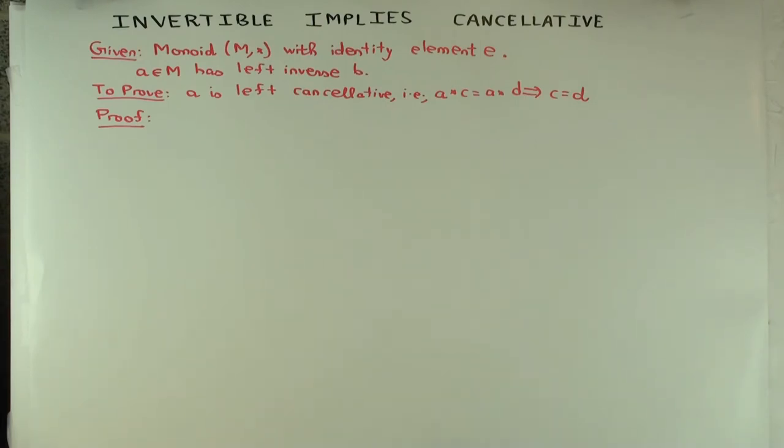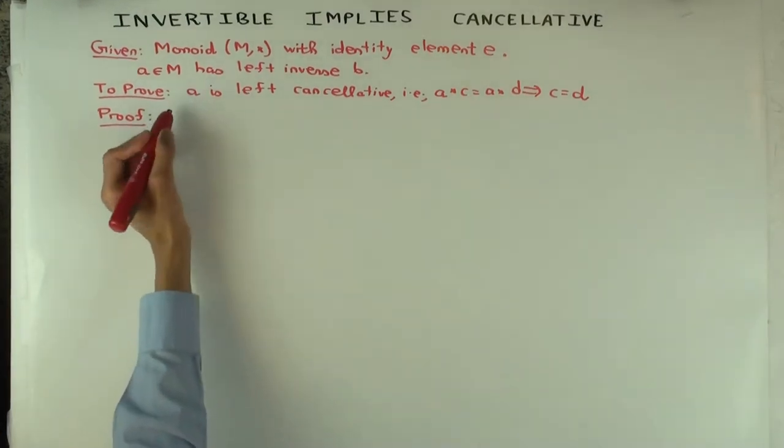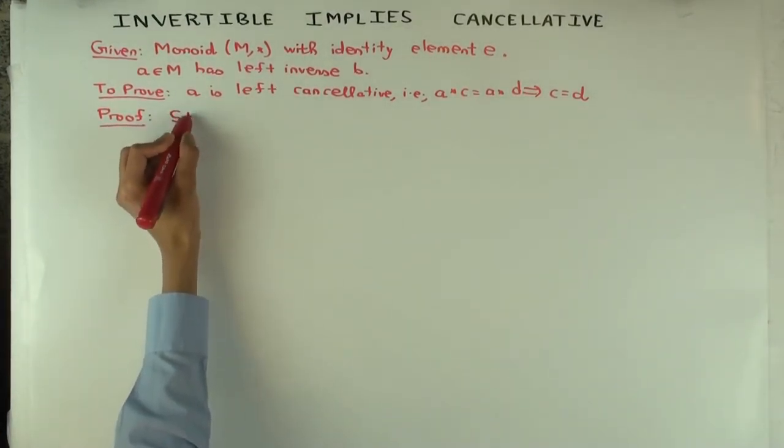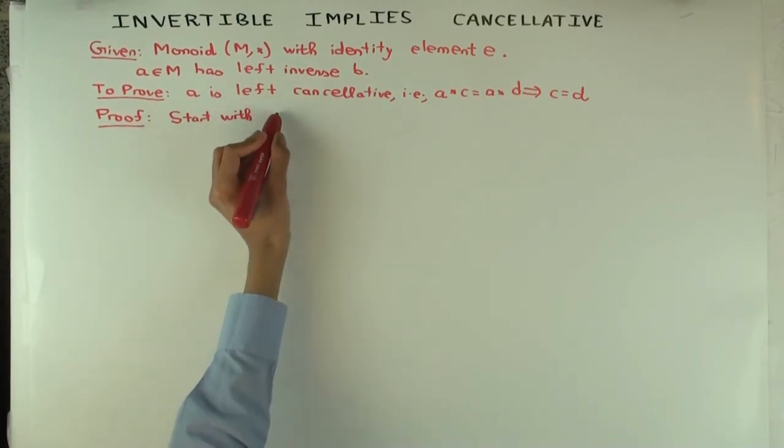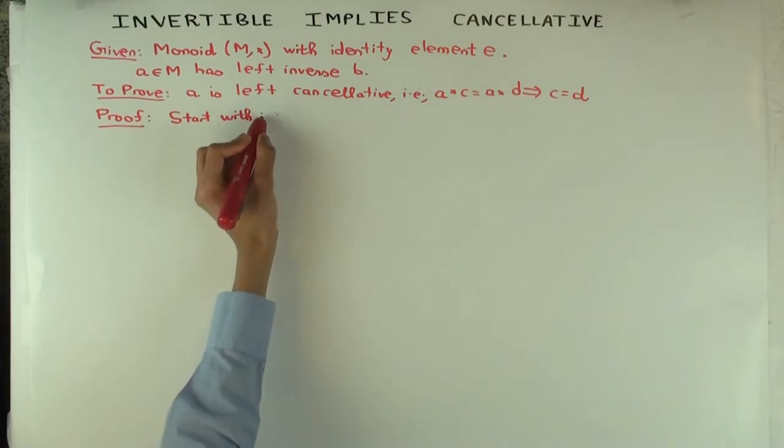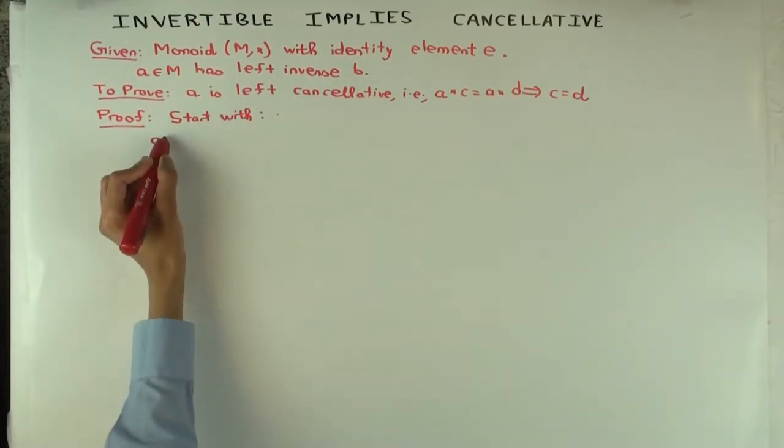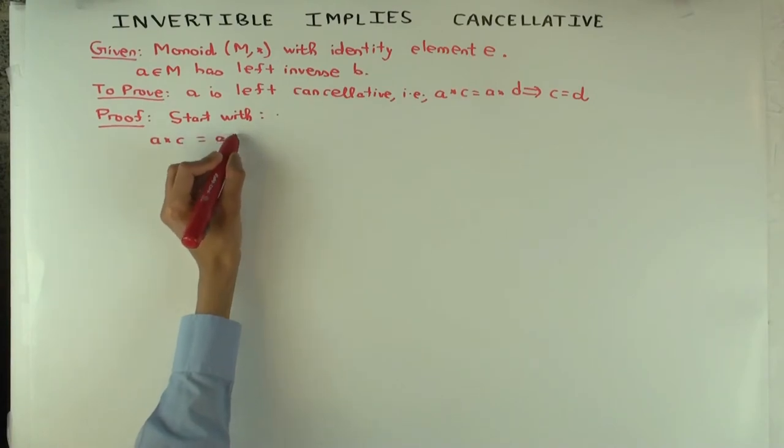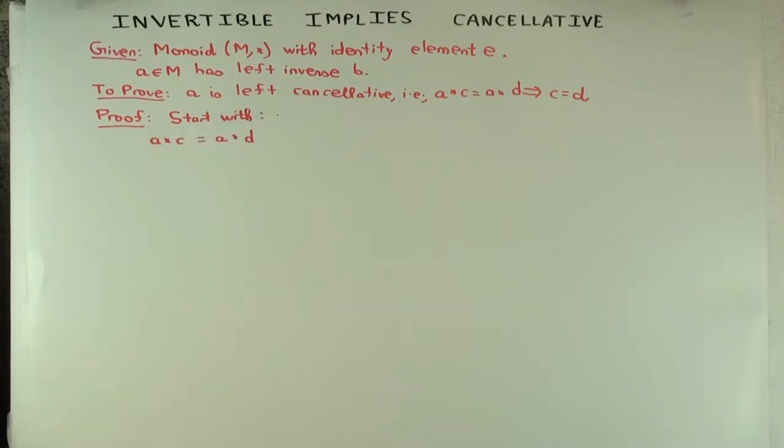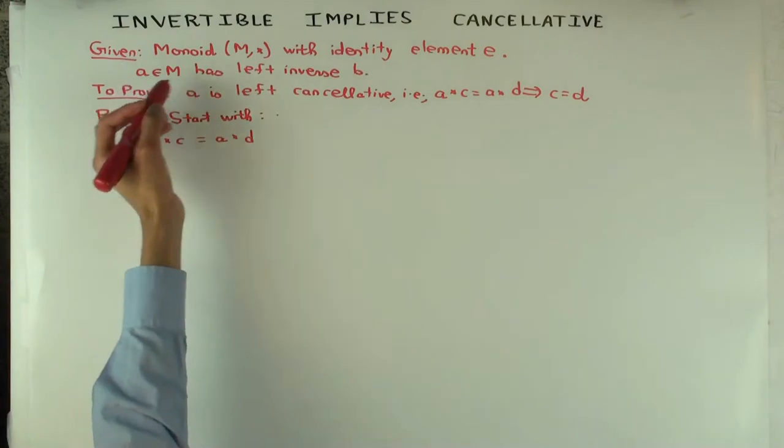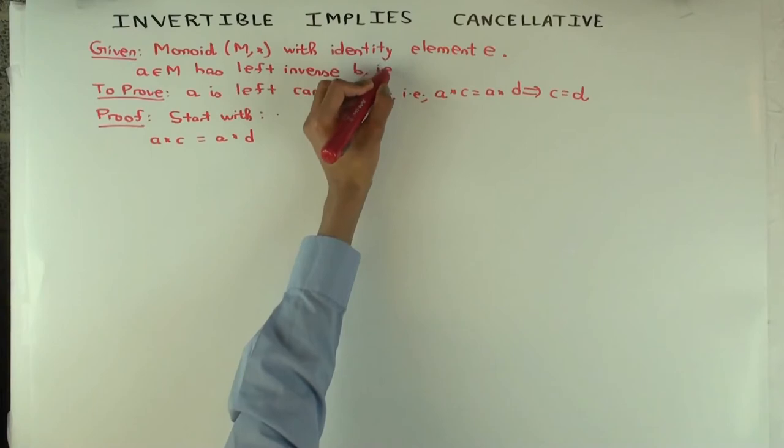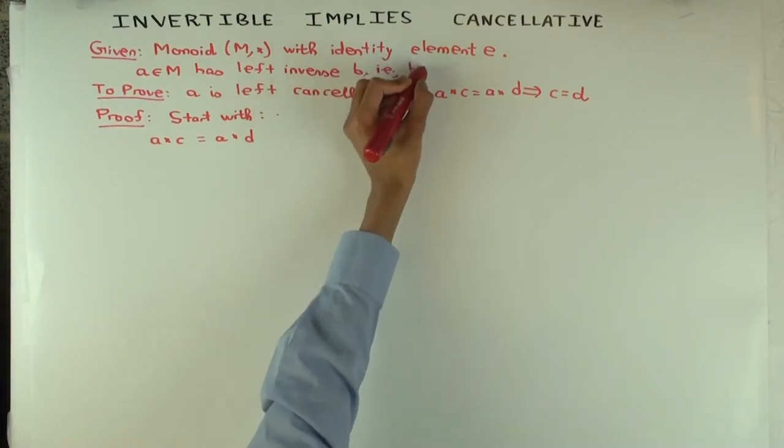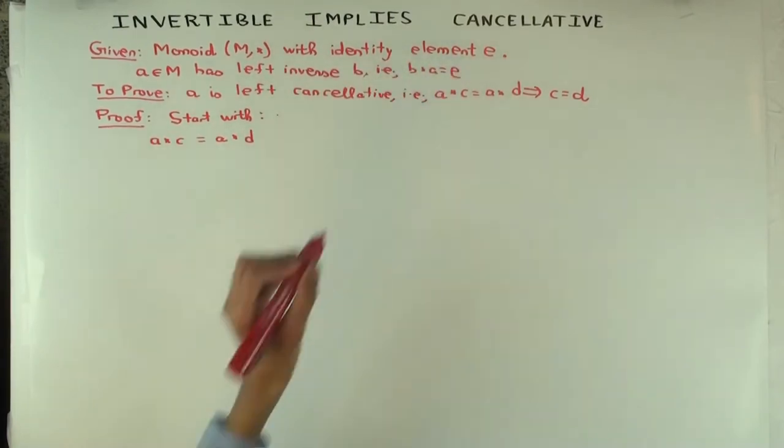So how would you prove this? Well, we start with A star C equals A star D, and then we have to do some manipulation. So I should explain what left inverse B means. What does it mean? B star A equals E.